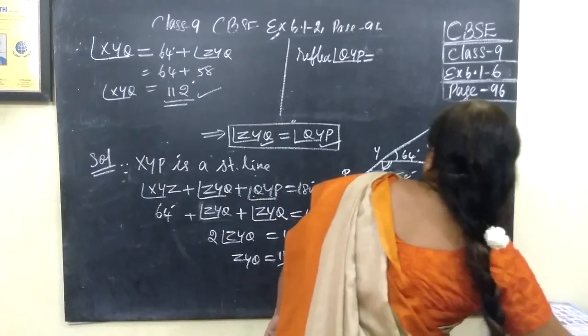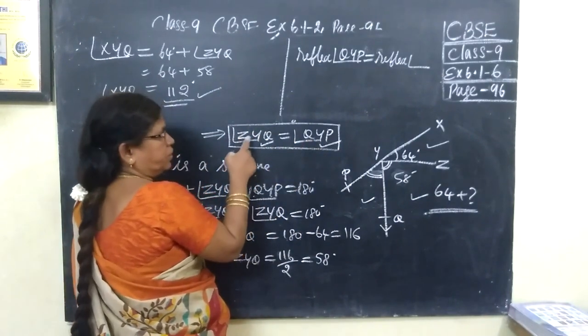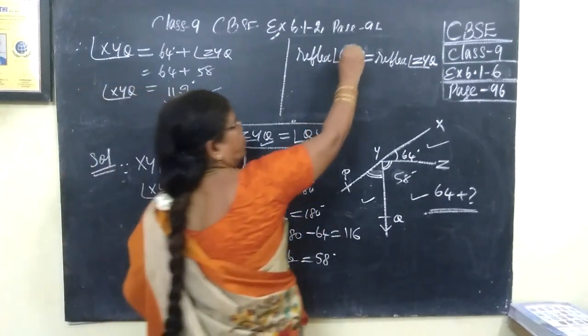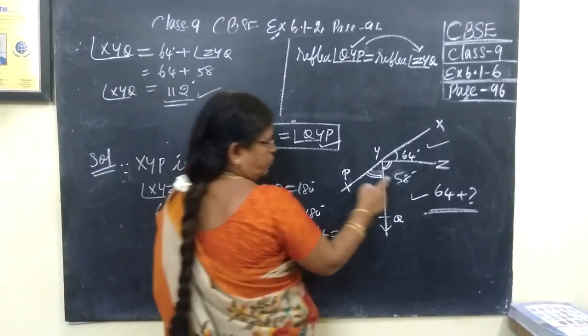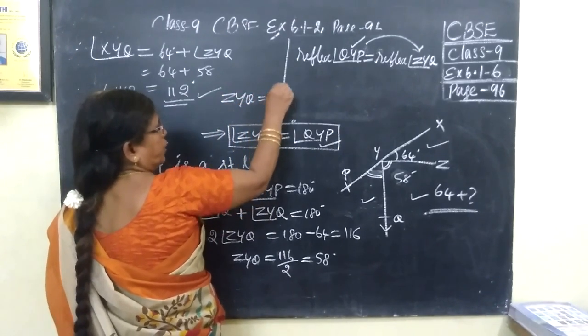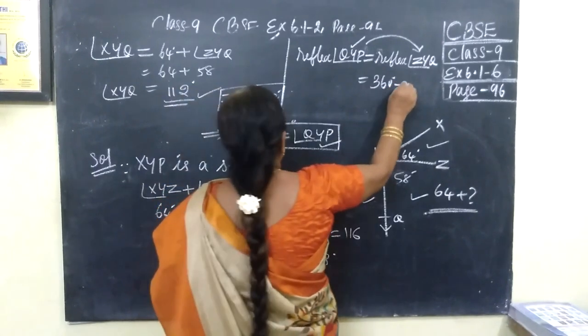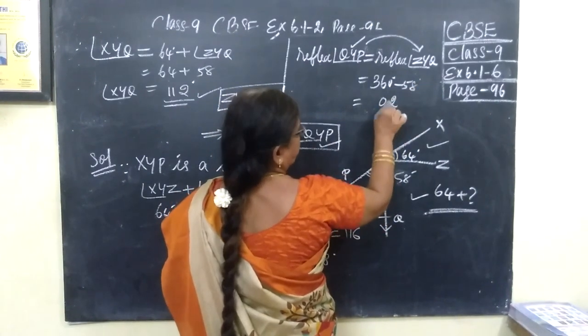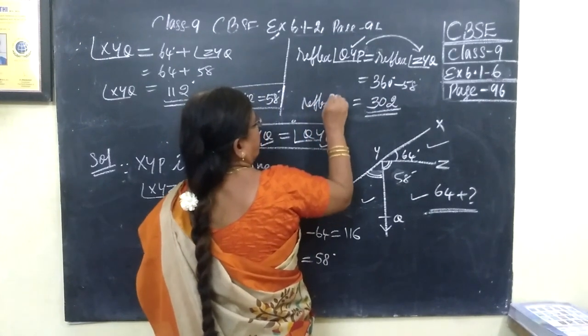Next is reflex QYP. Reflex QYP is nothing but reflex. This QYP is already equal to ZYQ. So here you write ZYQ, since QYP is equal to ZYQ. Instead of QYP, you can write it as ZYQ. We have found ZYQ, this is equal to 58 degree. We know ZYQ equal to 58 degree. Reflex means you are subtracting from 360 degree minus 58. So you can get 302. This is reflex angle QYP.